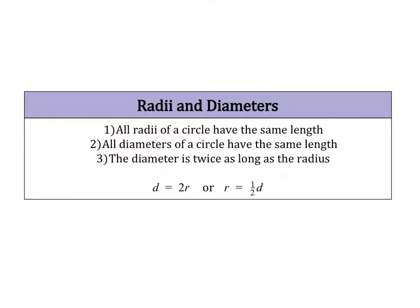Now let's talk about the relationship between radii and diameters. Radii is just the plural of radius. All radii of a circle have the same length — a circle can have many radii, and the length is always going to be the same. All diameters of a circle also have the same length. One really important thing to note is that the diameter is twice as long as the radius. So D equals 2 times R, or the radius equals one-half times the diameter.